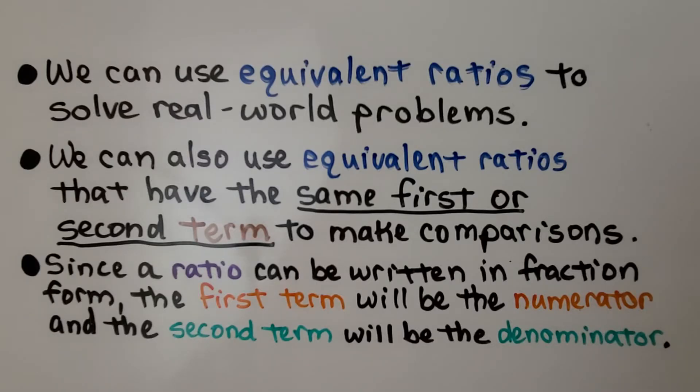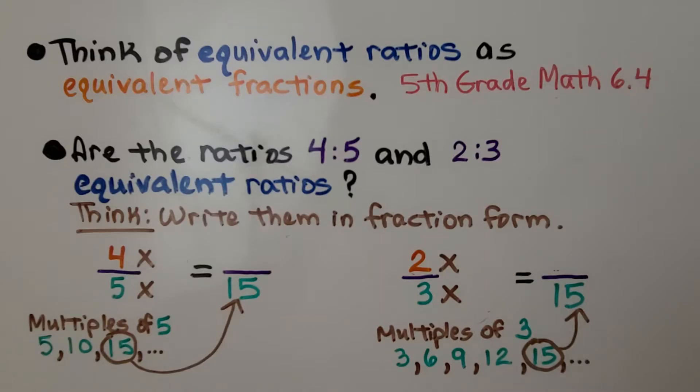And since a ratio can be written in fraction form, the first term will be the numerator and the second term will be the denominator. So we can think of equivalent ratios as equivalent fractions. We did those back in 5th grade math 6.4, and that's linked in the description if you need a review.